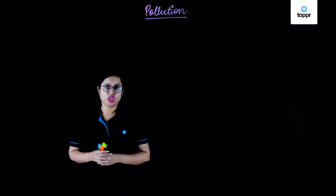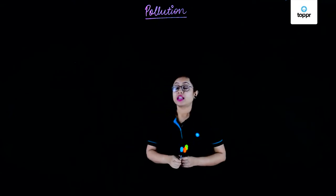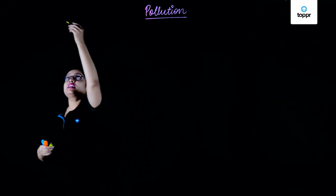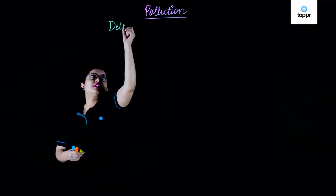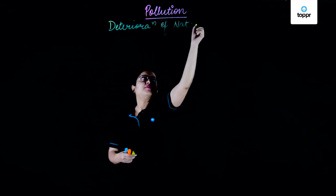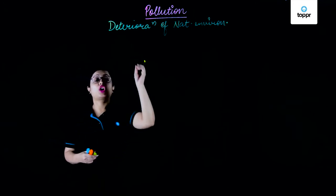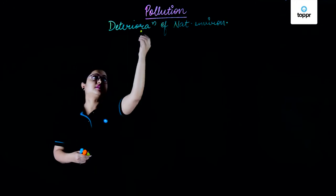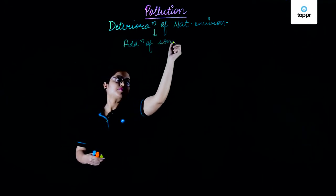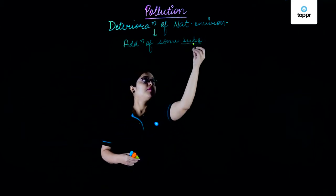What is pollution? Any deterioration of environment is known as pollution. Pollution is any deterioration of natural environment, and it is caused due to the addition of some substances. These substances or chemicals are known as pollutants.